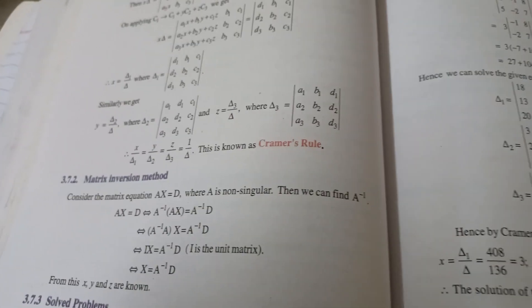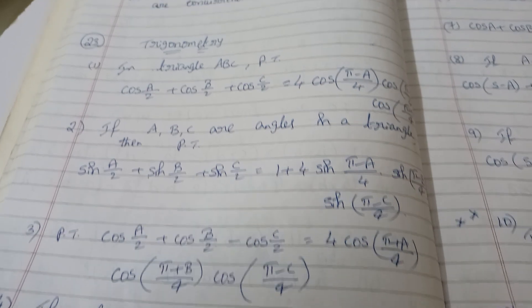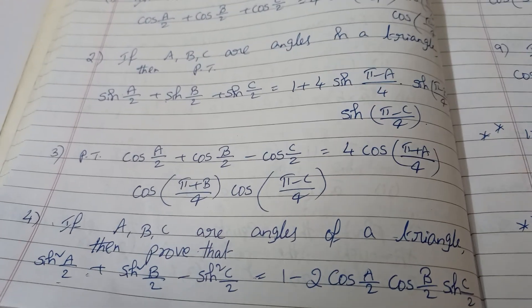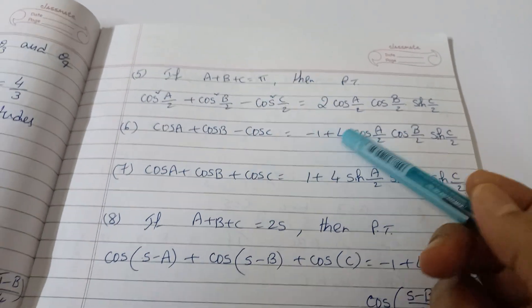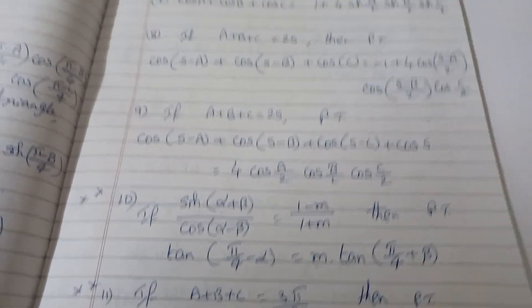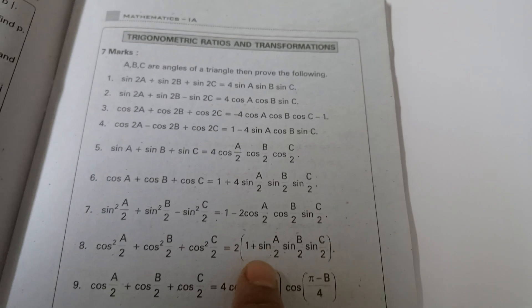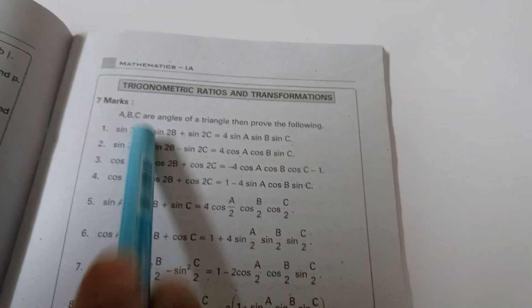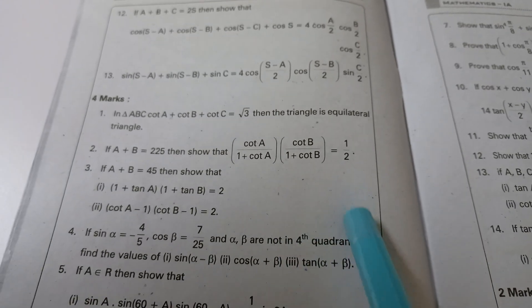Now go to trigonometry. Important 7-mark questions are explained in previous videos. If A+B+C = π, or A+B+C = 3π/2, practice these types of questions. If A, B, C are angles of a triangle, so A+B+C = π, find out these values. Also practice when the sum equals π/2 or 3π/2. Up to transformations, four more problems in trigonometry — practice all of these.